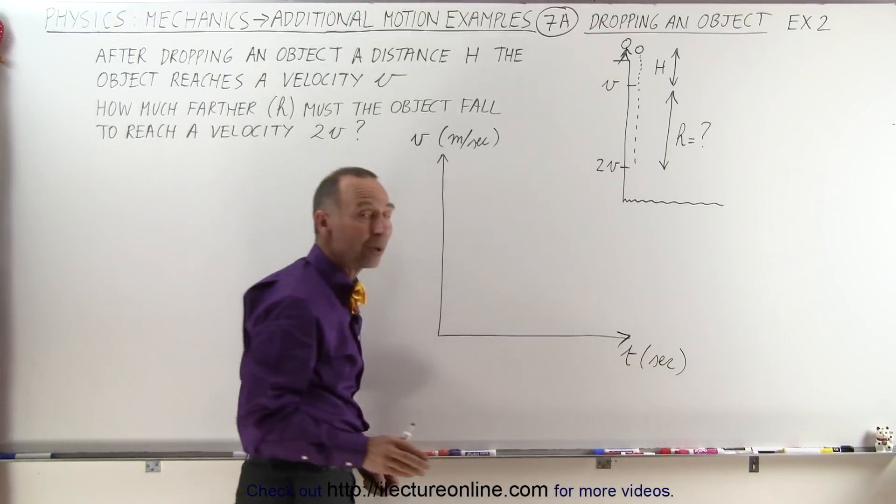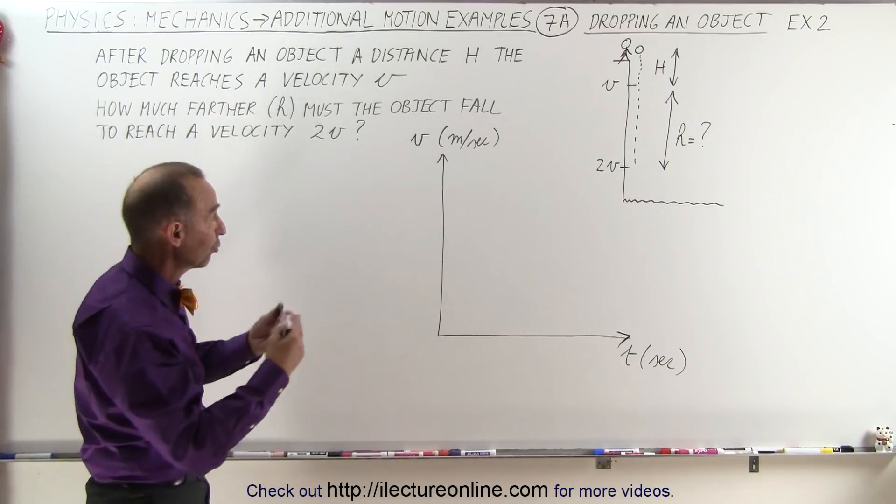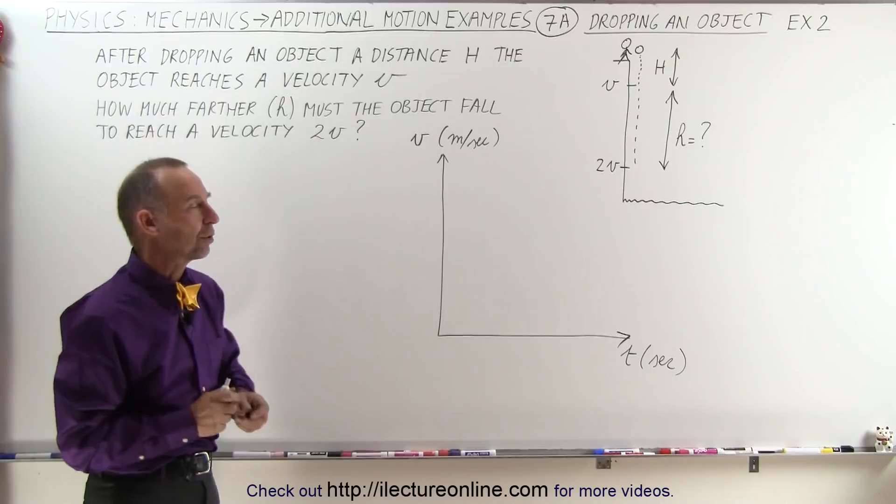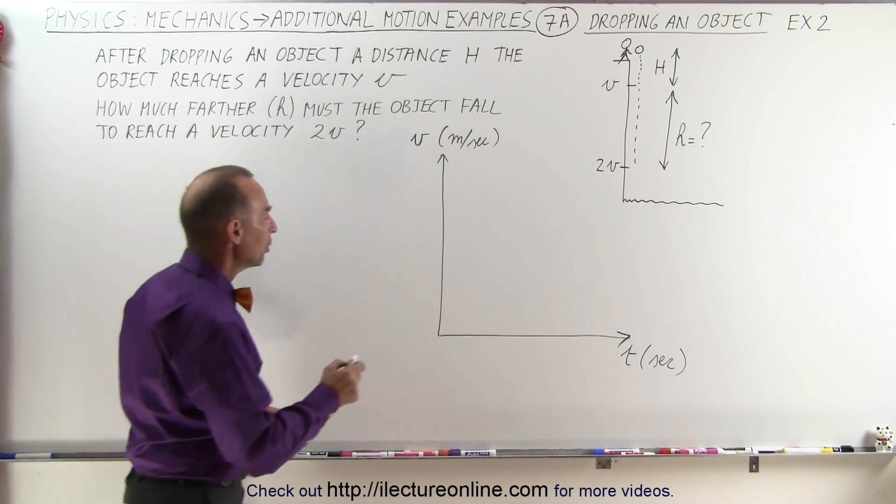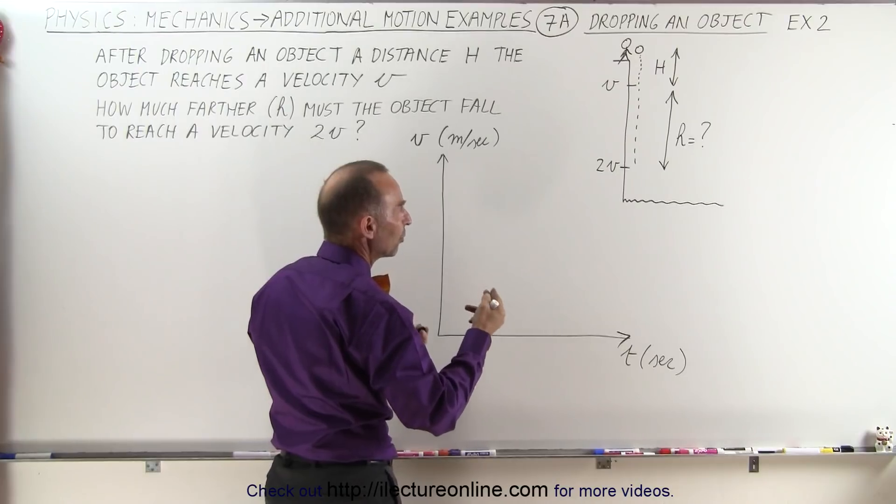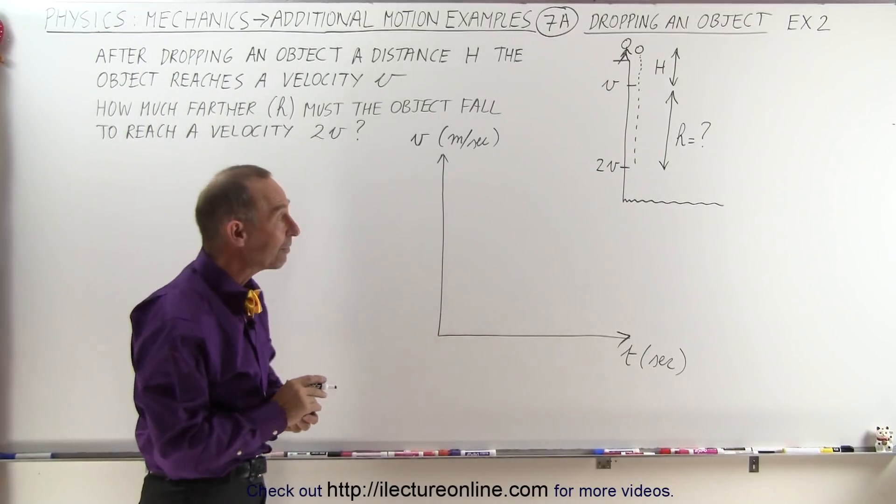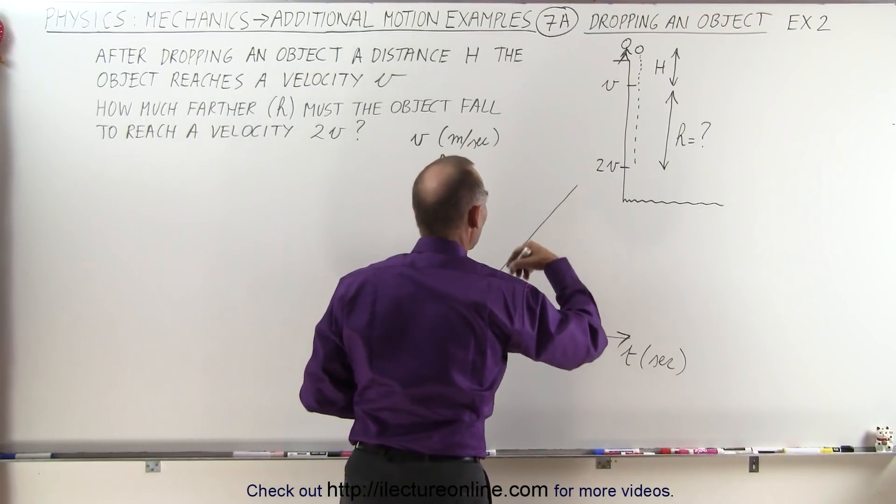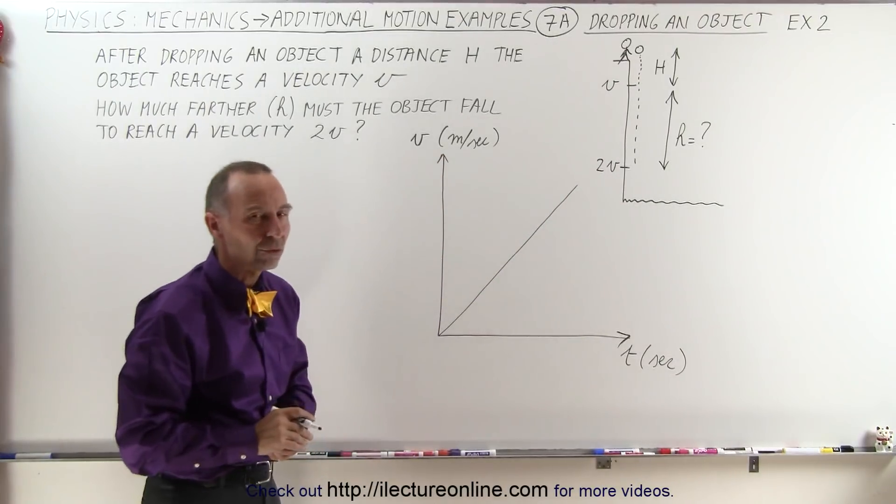Even though we don't know what the actual velocity and time are in meters per second and seconds, we'll know the ratio of those velocities. We know that since the velocity will be increasing because of the acceleration due to gravity, we're going to need a graph that looks like this where the slope is representative of the acceleration due to gravity.